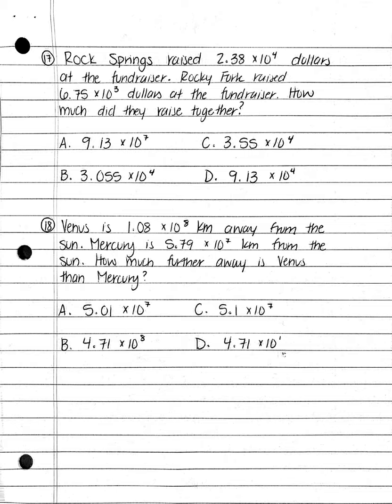Number 18. Venus is 1.08 times 10 to the eighth kilometer away from the sun. Mercury is 5.79 times 10 to the seventh kilometers away from the sun. How much farther away is Venus than Mercury? A. 5.01 times 10 to the seventh power; B. 4.71 times 10 to the eighth power; or D. 4.71 times 10 to the first power.